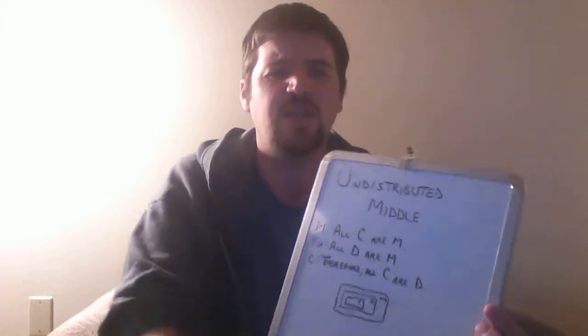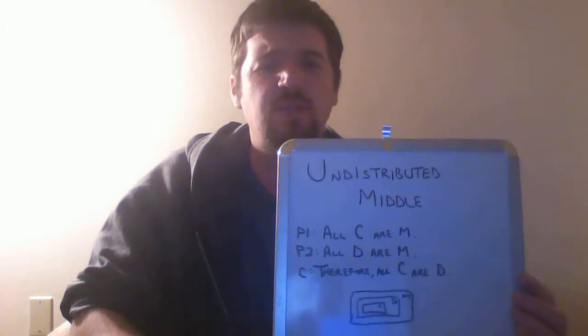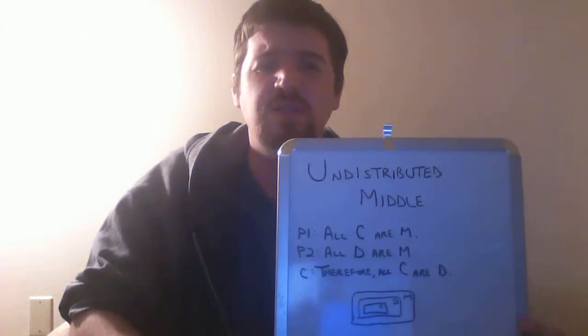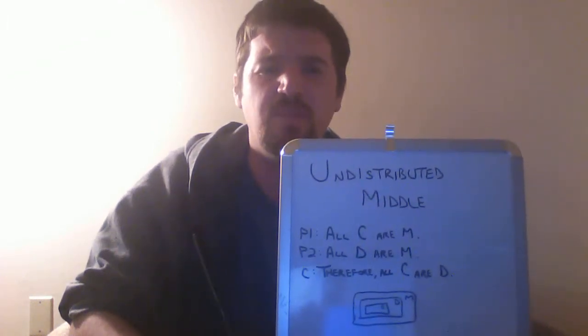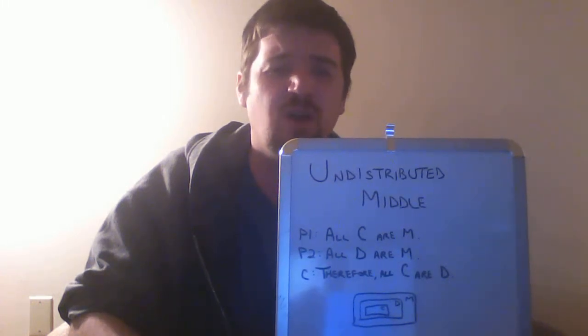This one is called the Fallacy of the Undistributed Middle, and it goes like this. Premise 1: All C are M. Premise 2: All D are M. Conclusion: Therefore, all C are D.